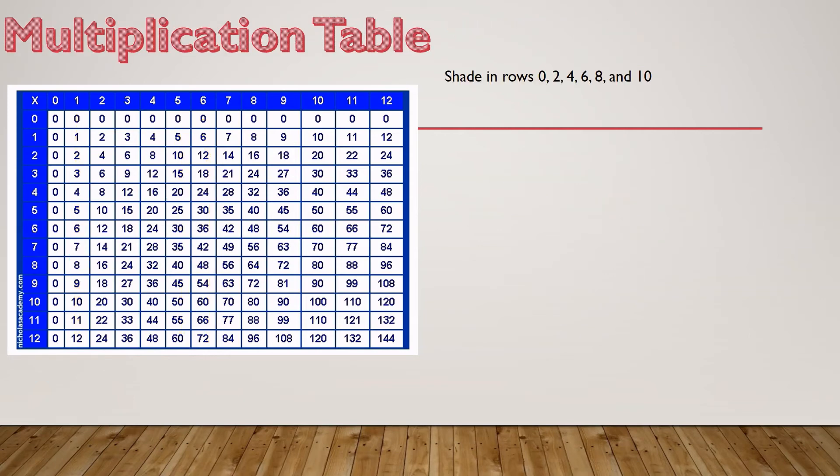Let's shade in row 0, 2, 4, 6, 8, and 10. And take a look to see what pattern you notice. I notice that all these numbers are even.